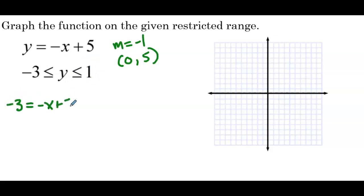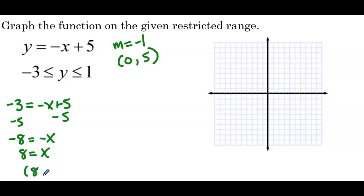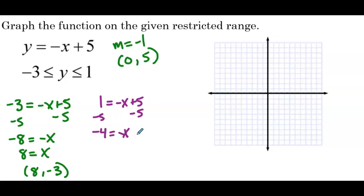My suggestion is to solve for the x value that outputs negative 3 and 1. Substituting negative 3 for y: negative 3 equals negative x plus 5, subtract 5 from both sides to get negative 8 equals negative x, so x equals 8. That gives the point (8, -3). Similarly, substituting y equals 1: 1 equals negative x plus 5, subtract 5 to get negative 4 equals negative x, so x equals 4. The point (4, 1) is on our graph.